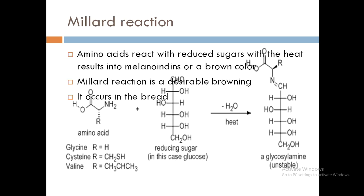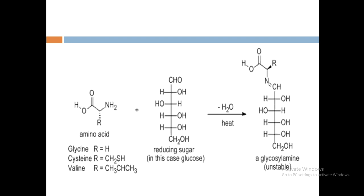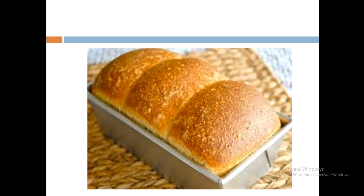The Maillard reaction — amino acids react with reducing sugars with the help of heat, resulting in the formation of melanoidins, which are brown in color. The protein reacts with the sugar present in the food material; with the action of heat both start reacting and the end product is melanoidin. This is a desirable browning. When bread undergoes the Maillard reaction, it turns brown in color because the protein gluten reacts with the sugar present in the wheat and gives the brown color. Here is the chemical structure, and here is the bread which is brown in color.